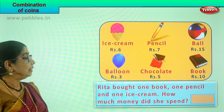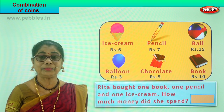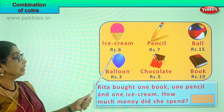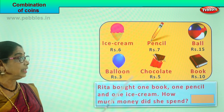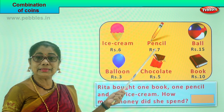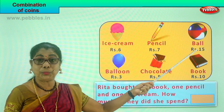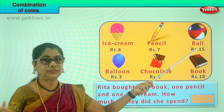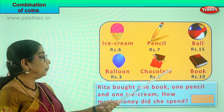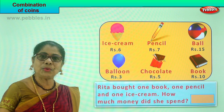Now let's go to another sum. Rita is going shopping — mum is giving her lots of coins in a little purse. We have an ice cream going for six rupees — that's a five rupee coin plus one rupee coin. A pencil is seven rupees — a five rupee coin and a two rupee coin. A ball is fifteen rupees — ten rupees plus a five rupee coin. A book is ten rupees, a chocolate is five rupees, and a balloon is three rupees. Let's see what Rita would like to buy.